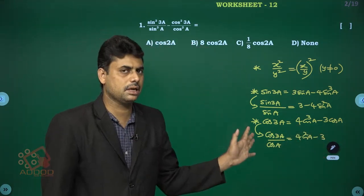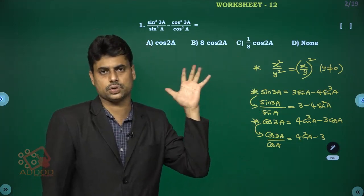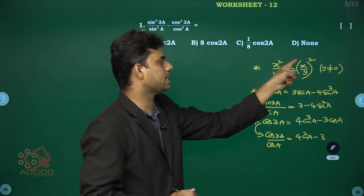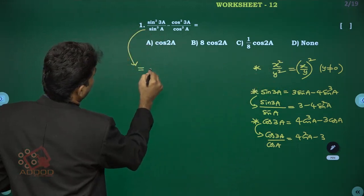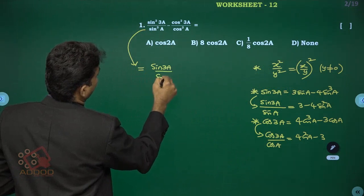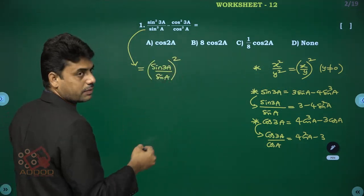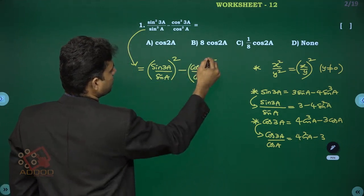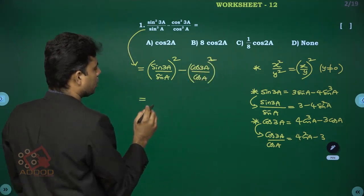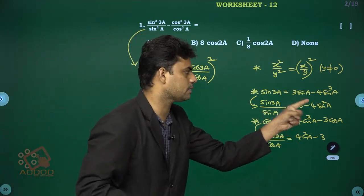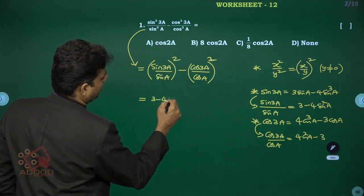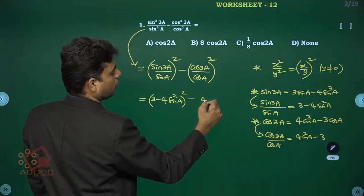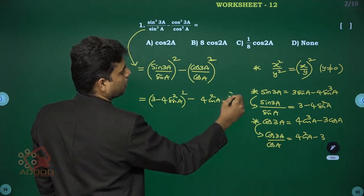Using these three results, the expression becomes (sin 3a/sin a)² - (cos 3a/cos a)², which equals (3 - 4 sin²a)² - (4 cos²a - 3)².